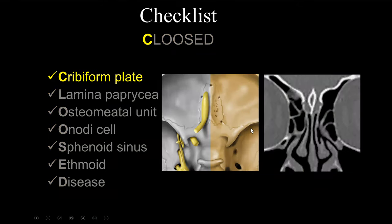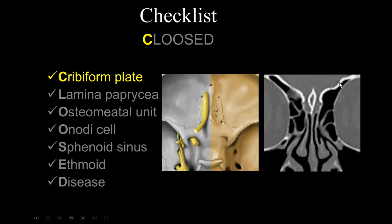We'll start with the cribriform plate, which is located in the anterior skull base. It's a very thin bone with small perforations that allow the first nerve to extend its neurofibrils through the cribriform plate to innervate the nasal cavity. The adjacent anatomy includes the fovea ethmoidalis, the lateral lamella, and a small defect in the lateral lamella for the anterior ethmoidal artery.